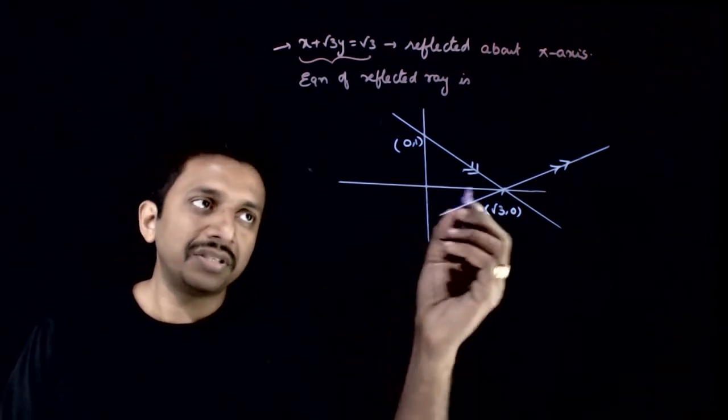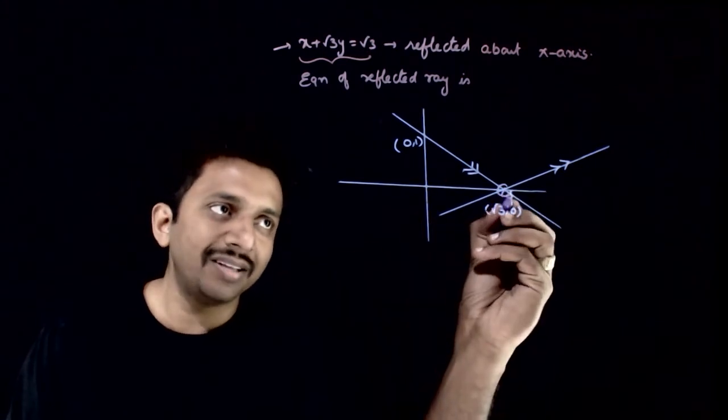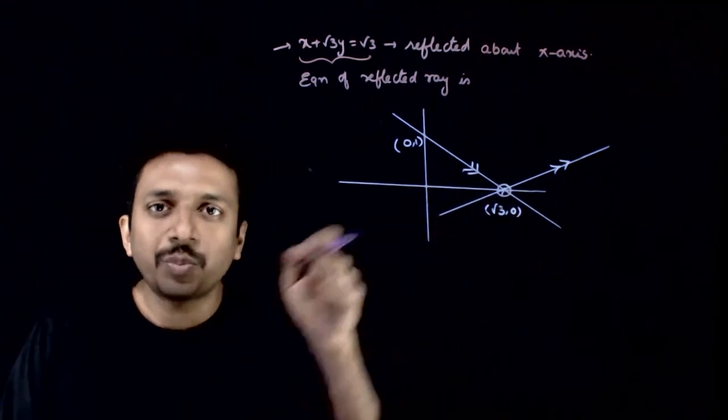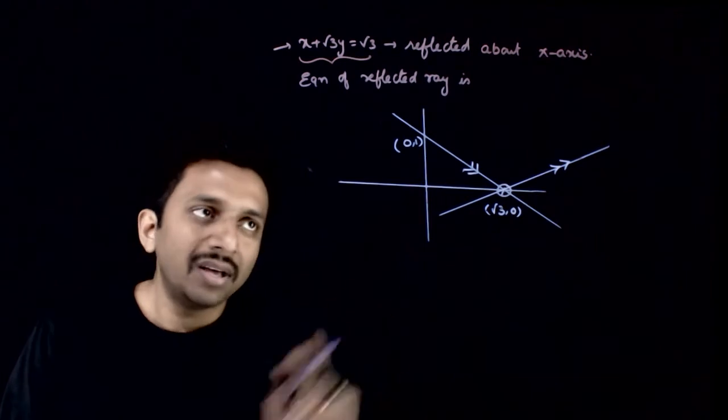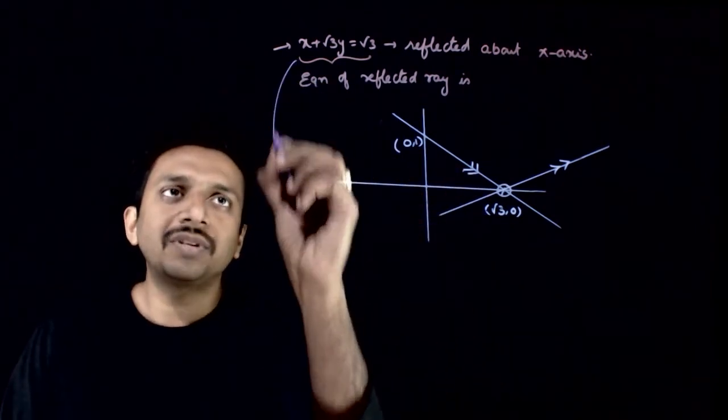A very straightforward question. If a line gets reflected about the x-axis, the important thing is we need to find from which point the reflection happens. That is nothing but the x-intercept of this line. So what is the x-intercept?